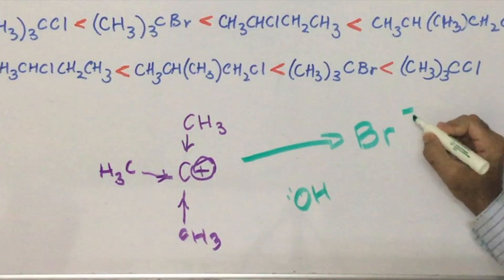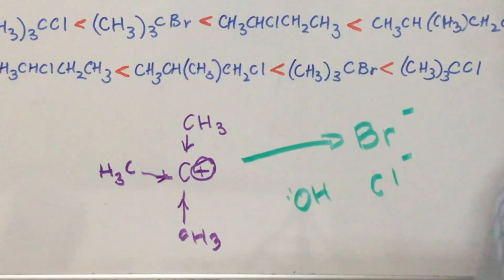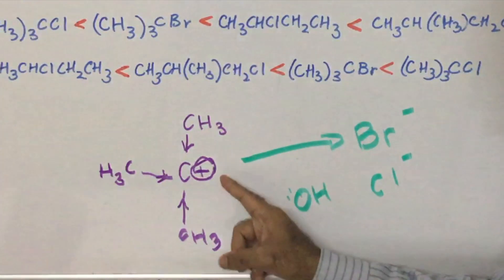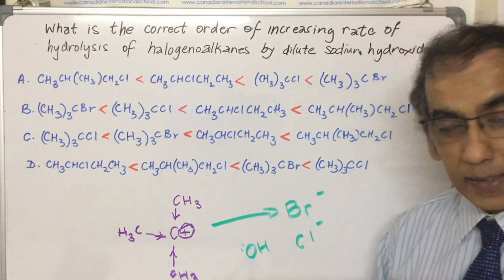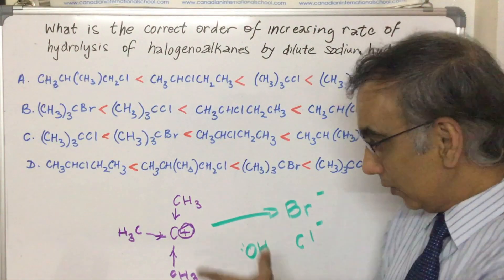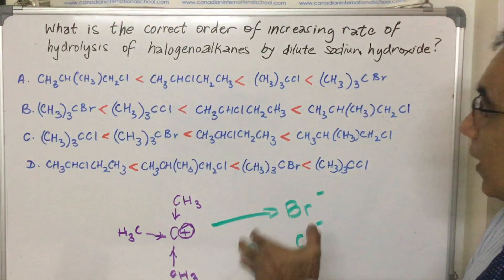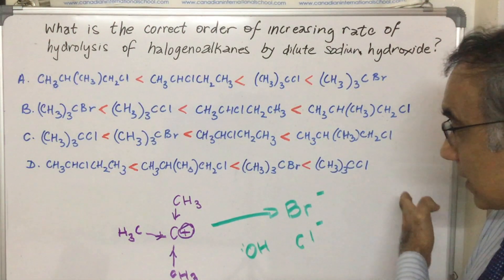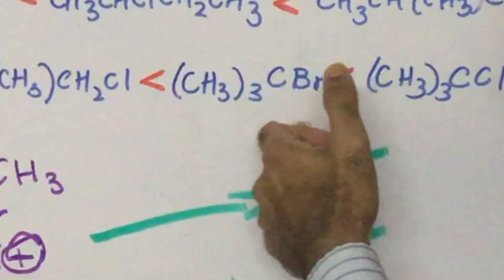This is the most preferred configuration for the carbocation because you get the maximum inductive effect with three CH3 groups. So there's definitely going to be a preference for a high level of hydrolysis when you have a CH3 structure like this here or when you have one like this here.